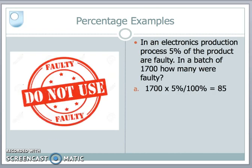We can work out percentages in all sorts of ways. Here's a very inefficient factory in an electronic production process where 5% of products are faulty. In a batch of 1,700, how many were faulty? We divide 1,700 by 100 to get 1%, which is 17, then multiply by 5, giving 85 faulty units. Percentages are very easy to use in working out fractional values.